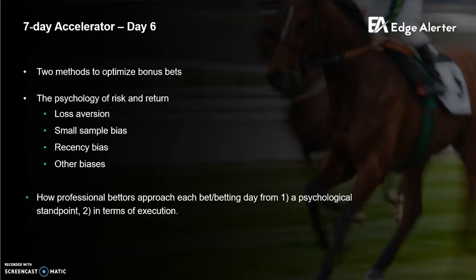Hey guys, Jonas here. It's day six of the 7-Day Accelerator and today we're going to go through bonus bets and how to optimize them using two key methods. I'm going to go through the psychology of risk and return — some psychological biases applicable to both the betting world and the general finance world. And then finally I'm going to go through how professional bettors approach betting from both a psychology standpoint and also in terms of execution.